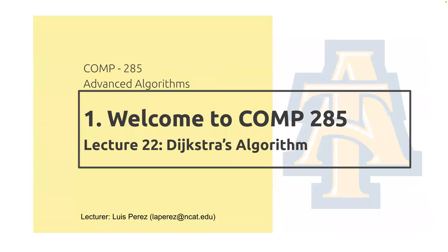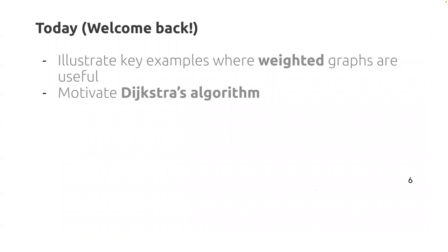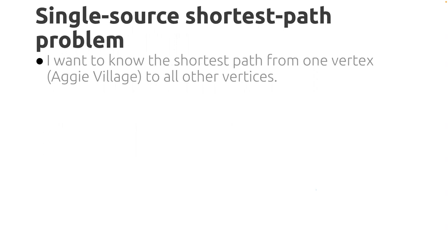Let's go ahead and get started today. We're going to cover Dijkstra's algorithm — we teased it a little bit before spring break, but we're going to review some of that. We're going to illustrate key examples where weighted graphs are useful, and that's going to motivate Dijkstra's algorithm, which solves the single source shortest path problem in weighted graphs with positive edge weights. The problem: I want to know the shortest path from some source vertex to all other vertices in my graph where my graph is weighted.